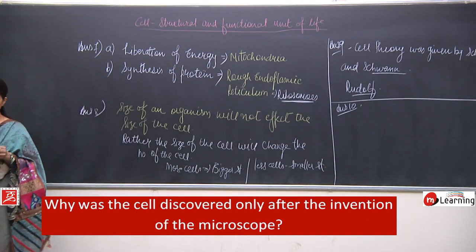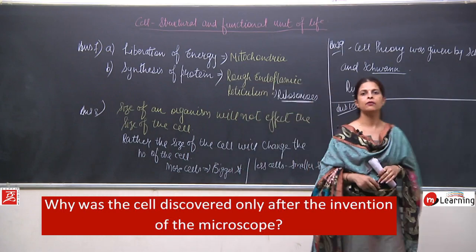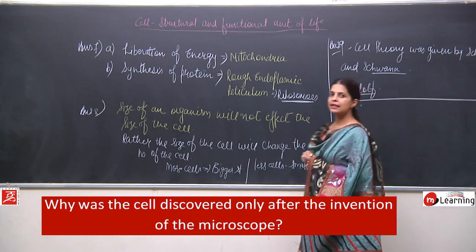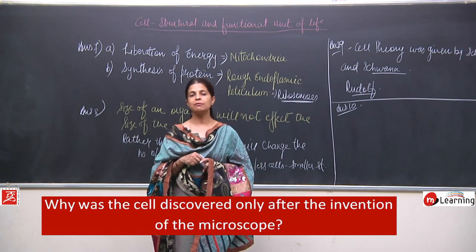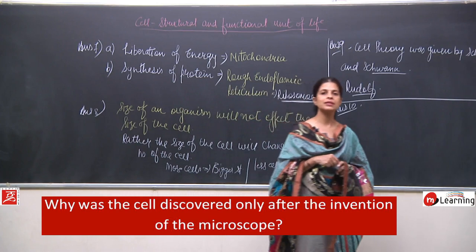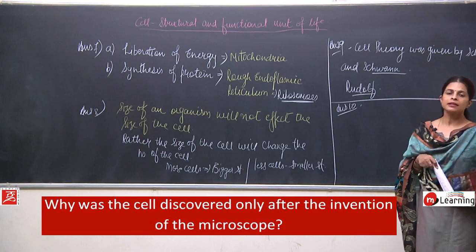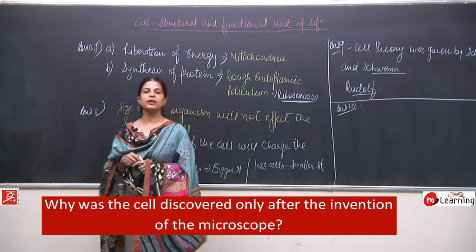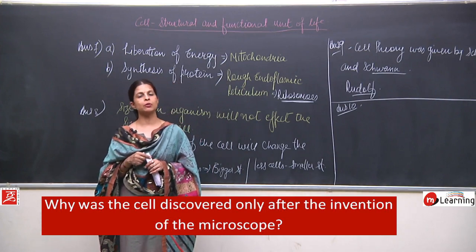Question number 10: Why was the cell discovered only after the invention of the microscope? We all know that cell is a microscopic structure. Cells are very very minute and cannot be seen by the naked eye. So to see the structure of the cell, or to even find out that cells exist, special instruments were needed.